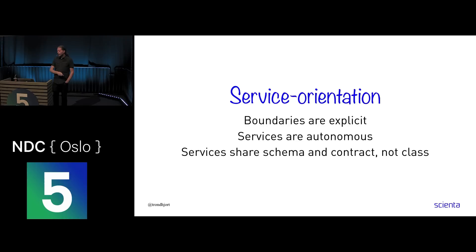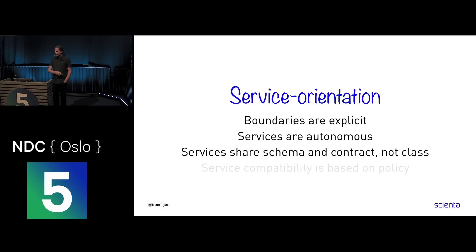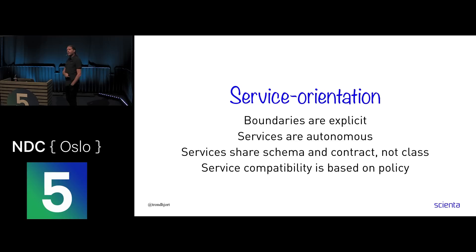Autonomy, again. He also added a few others which are probably a bit outdated: you shouldn't share types — just schemas — and services couple based on policies. I think these are still surprisingly valid, apart from probably the last two. Especially the second one — autonomy — I think we've failed a lot on that. Back in 2004, there was a lot of focus on reuse: if you create a service it should be reused, otherwise it doesn't deliver value. But microservices are not about reuse.